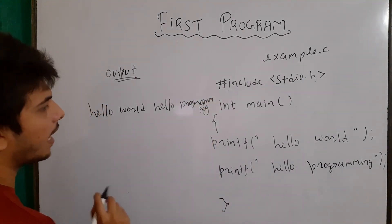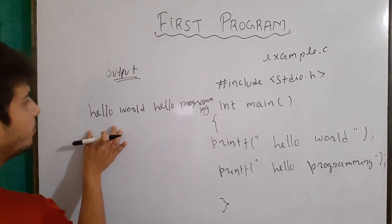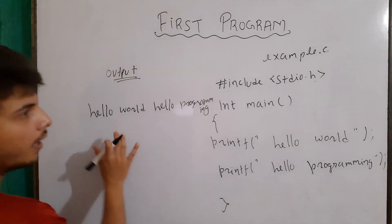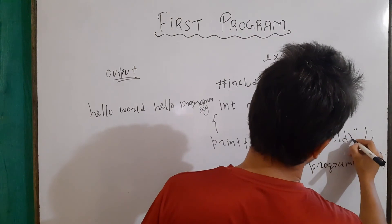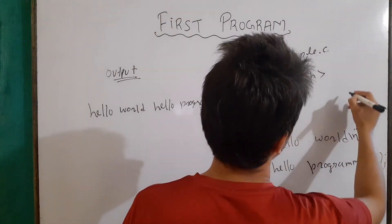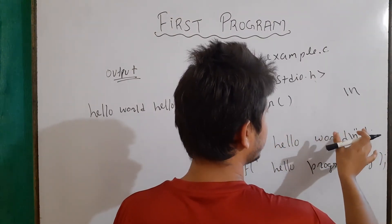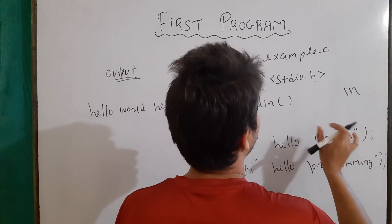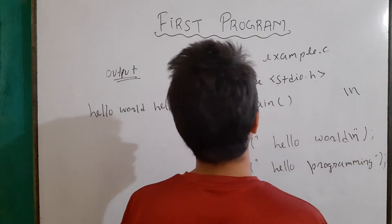But let's say that I want to print hello programming from the next line. Now, what should I do? I should write here a special character, which is the slash n. Now, slash n is the special character, which will bring our cursor to the next line.